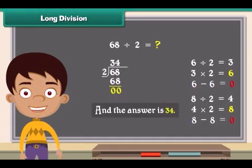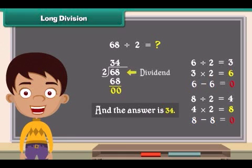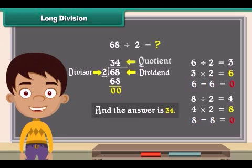Here 68 is dividend, 2 is the divisor, 34 is the quotient, and remainder is 0.